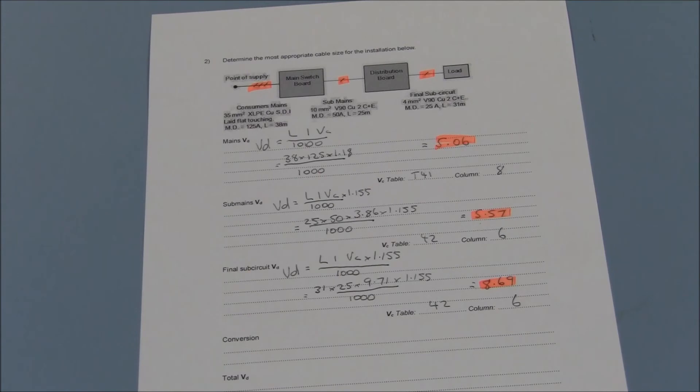Finally, the single phase drop of the final sub circuit is 8.69. Again, remember to multiply the value of VC by 1.155 as it's a single phase circuit. Table 42 column 6 is the reference once more.